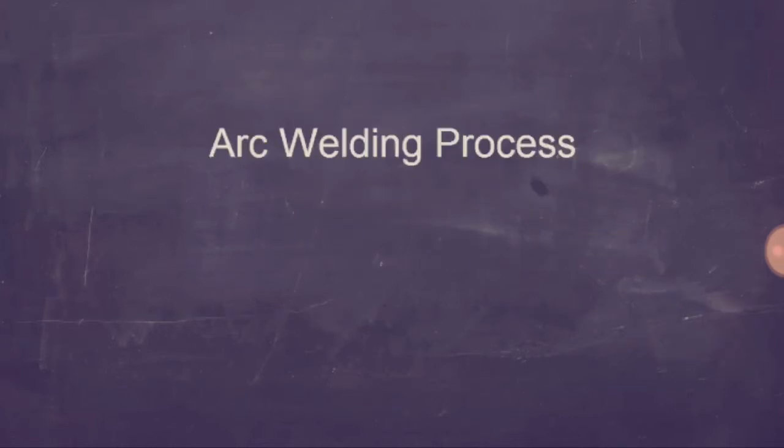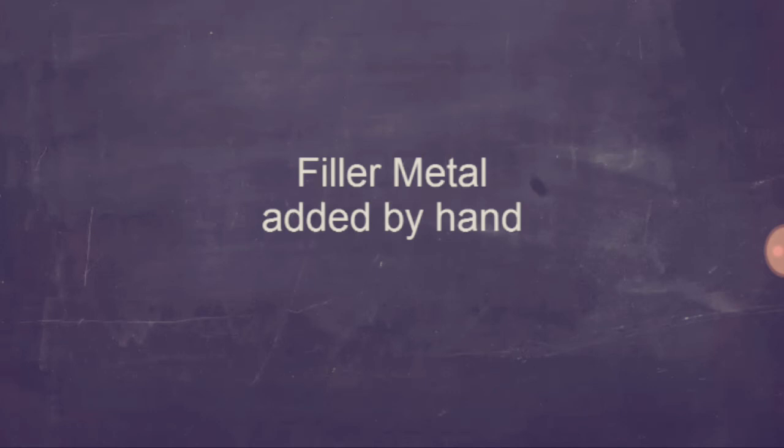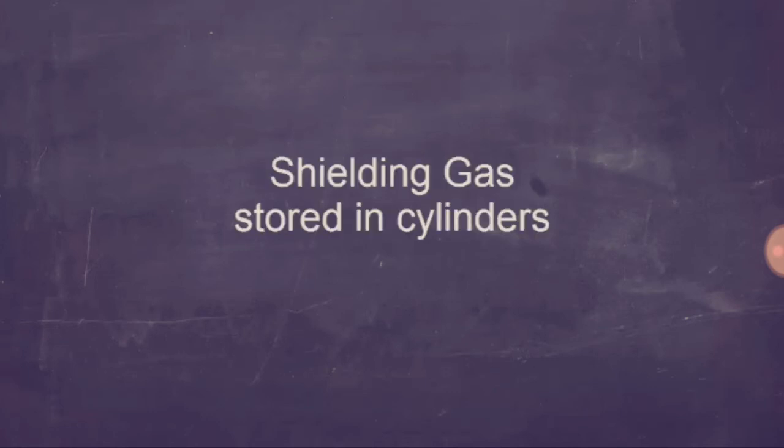So in summary, TIG welding is an electric arc welding process. It uses a non-consumable tungsten electrode. The filler metal is added separately in the form of filler rod. And the shielding gas comes from a high-pressure cylinder.